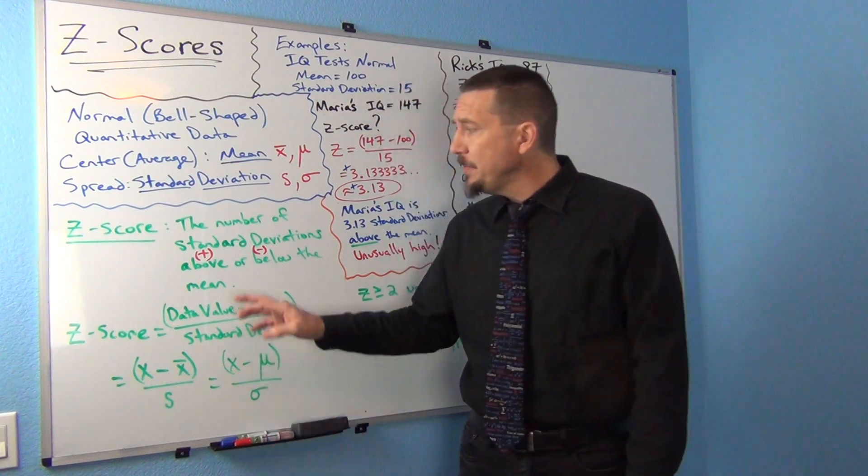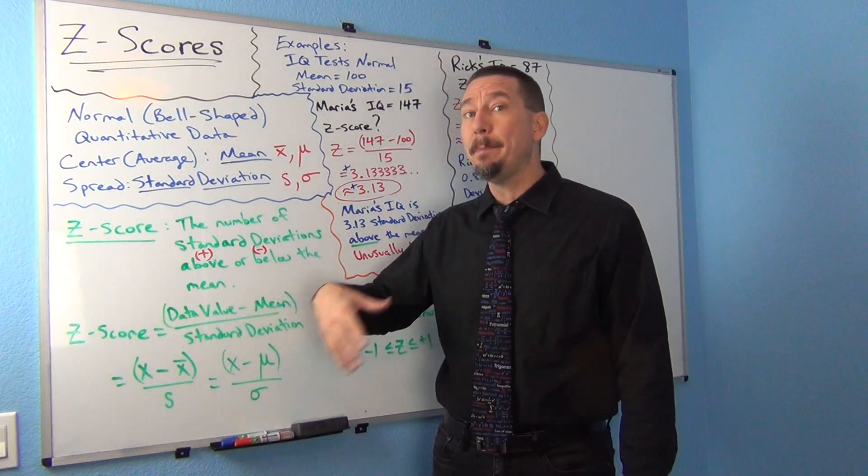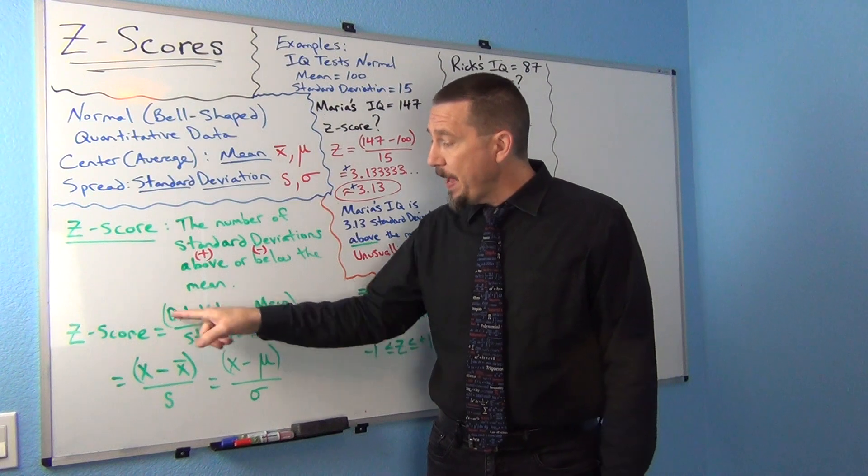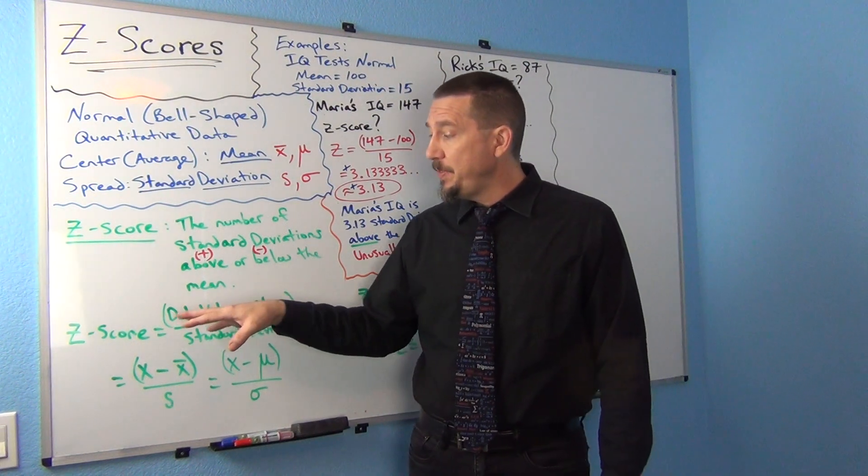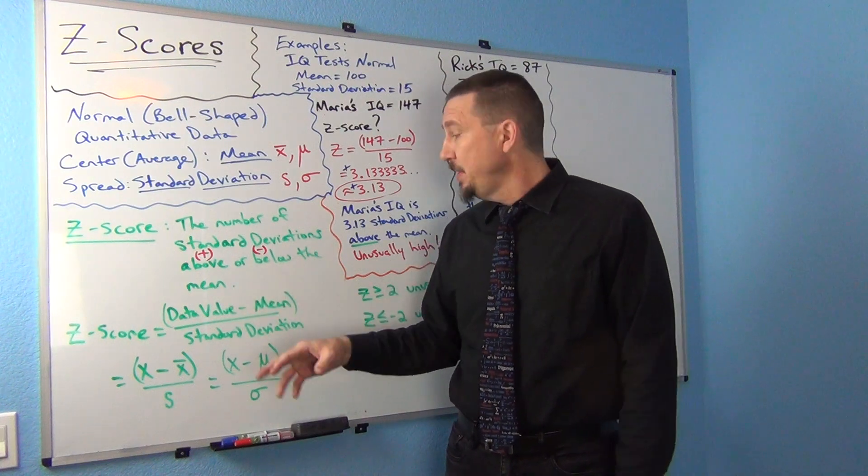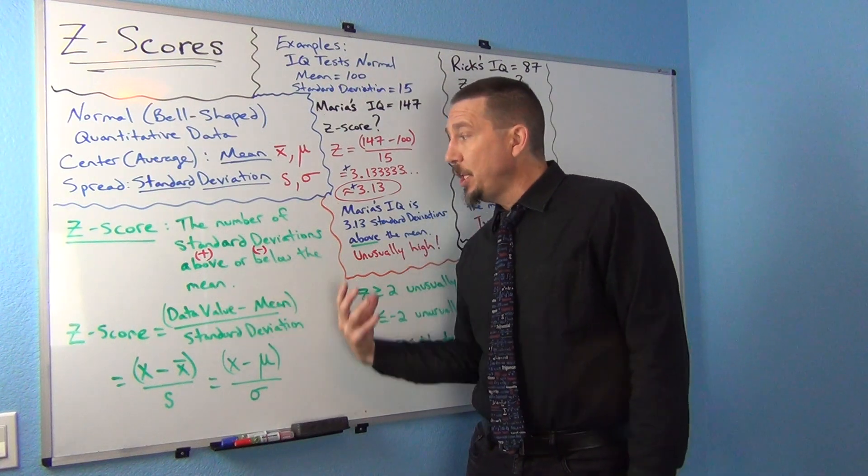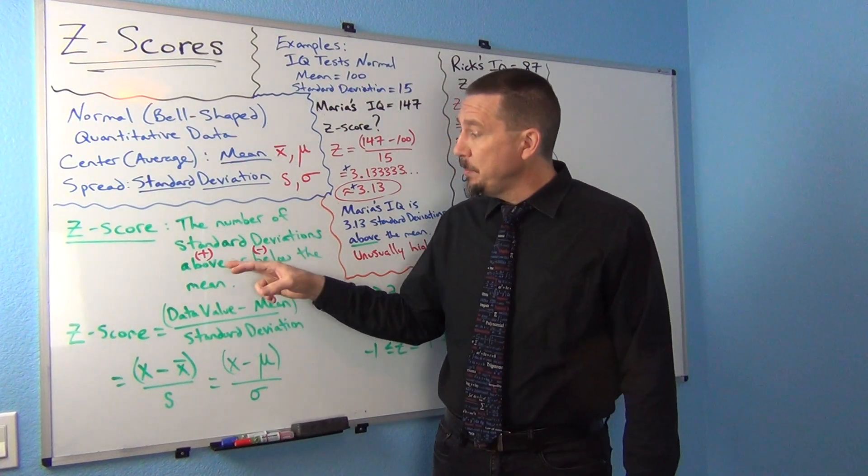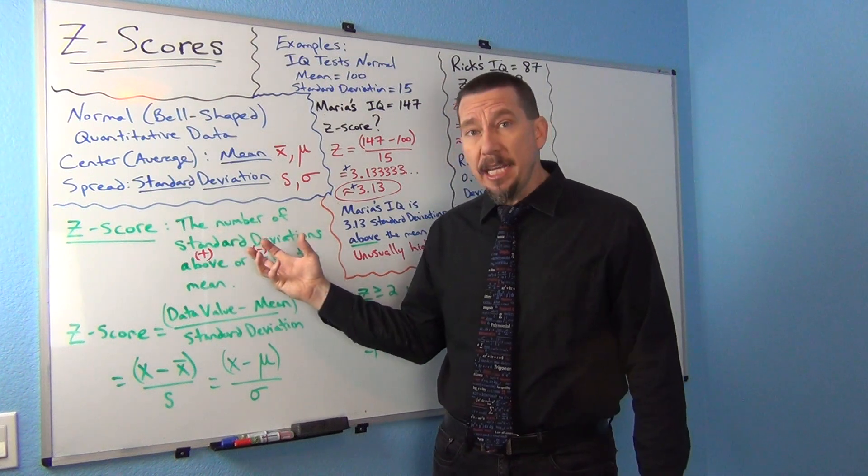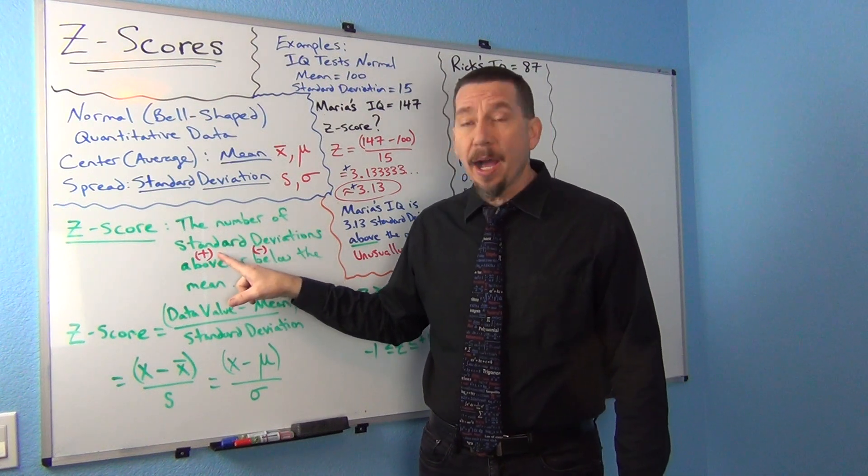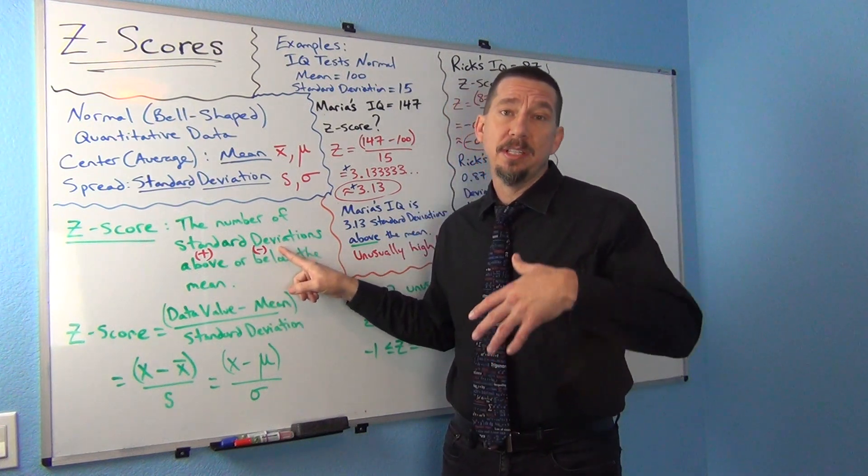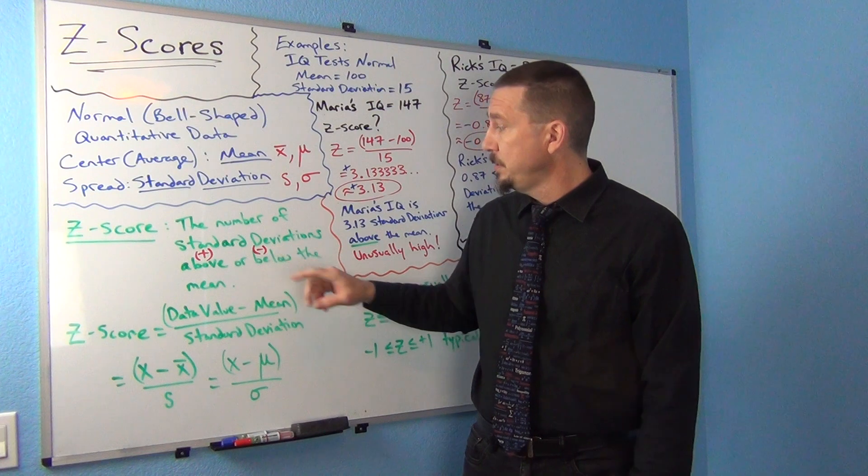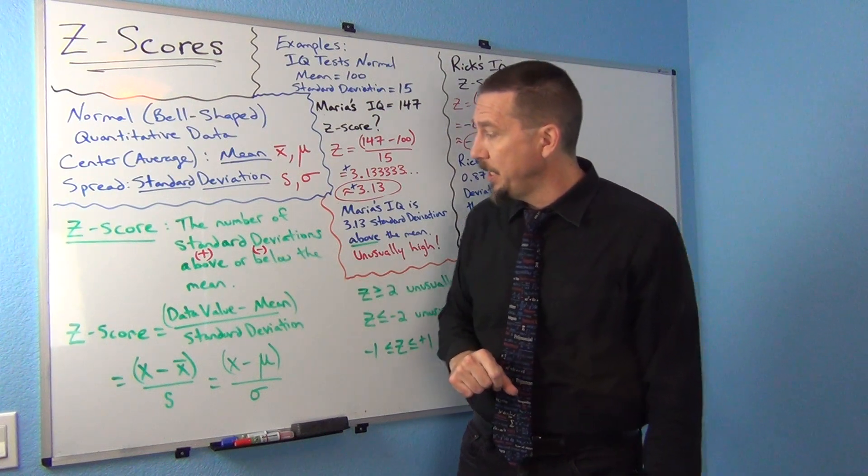Now, if this Z-score actually comes out positive, the data value must have been above the mean. And if the Z-score comes out negative, then the data value must be below the mean. So kind of keep in mind when you're explaining the Z-score, positive Z-score you're going to say above in the sentence, and negative Z-score you're going to say below in the sentence.